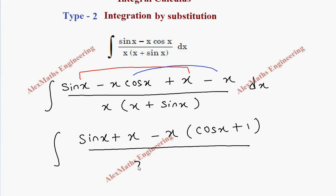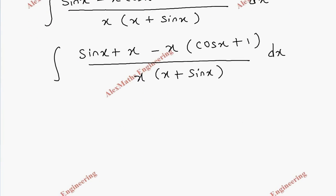Now we have denominator x into x plus sine x dx. We are going to divide individually by taking this as one term and this as another term. So when we divide, the first term is going to be sine x plus x by x into x plus sine x dx.